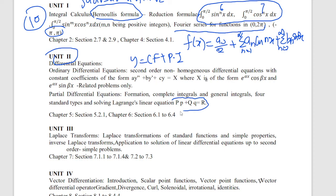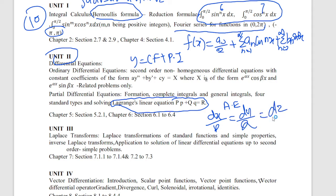Mostly in the Lagrange equation — the Lagrange equation based on the problem — we have to solve it. That is Pp + Qq equal to R. In the formula, it is the Lagrange equation — an auxiliary equation. In the formula there are 2 marks: dx by capital P, dy by capital Q, dz by capital R. Lagrange equation is 10 marks. 2 marks is CF, 5 marks for particular integral.